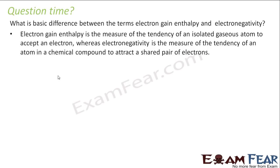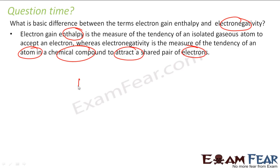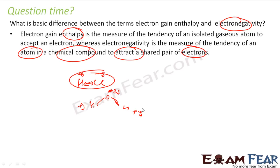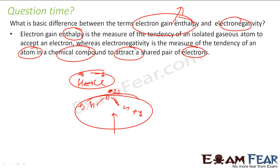What is the difference between electron gain enthalpy and electronegativity? Electron gain enthalpy is the energy liberated or required when an electron is added to an isolated atom — it can be exothermic or endothermic. Electronegativity is the tendency of an atom in a chemical compound to attract the shared pair of electrons. For example, in HCl, chlorine attracts the shared electrons more, getting a slight negative charge. In water, oxygen attracts electrons more towards itself. That attraction within a shared pair in a compound is electronegativity.